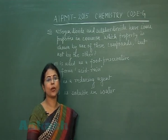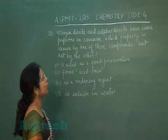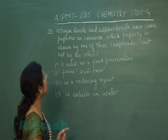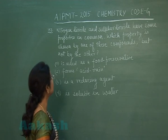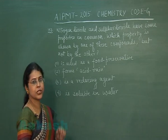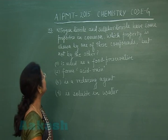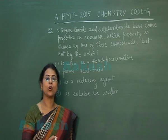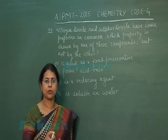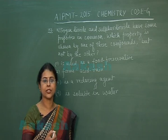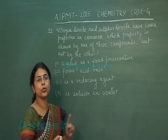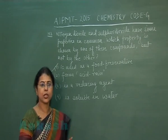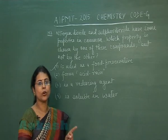Question number 153: Nitrogen dioxide and sulfur dioxide have some properties in common. Which property is shown by one of these compounds but not by the other? Four options are given. The first option is: this is used as a food preservative. Among nitrogen dioxide and sulfur dioxide, only sulfur dioxide is used as a food preservative. So this option is correct — applicable for SO₂ but not for NO₂.